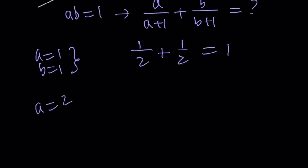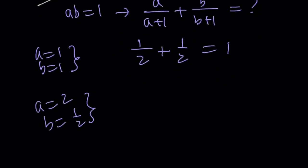How about trying a equals 2 and b equals 1 half? Let's try these. Replace a with 2, 2 over 3. Replace b with 1 half. 1 half divided by 3 halves, which is 1 third. 2 thirds plus 1 third is equal to 1 again. You can try millions of pairs, and you're always going to get 1, because that is the constant answer to this expression.